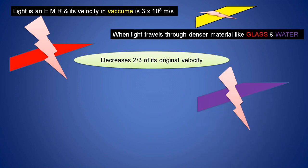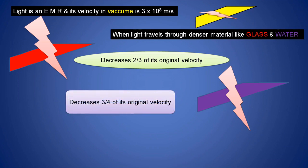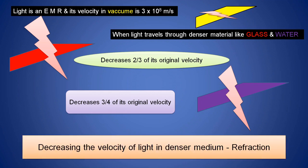When light travels through water, it decreases to 3/4 of its original velocity. That means whenever light passes through denser materials, the velocity of light decreases. Why does the velocity of light decrease when it passes through denser material? This is because of optical refraction. So decreasing the velocity of light in a denser medium is due to refraction.